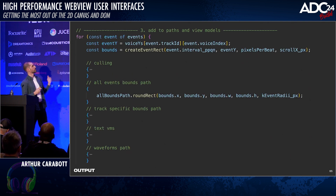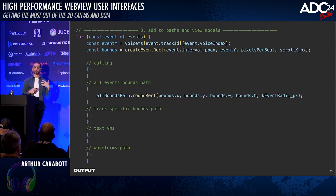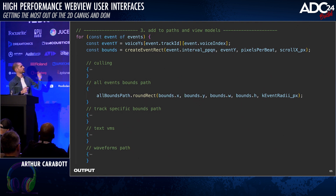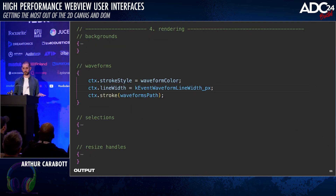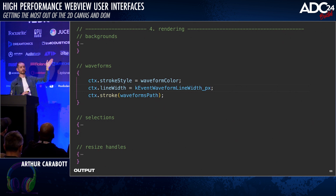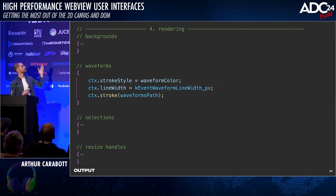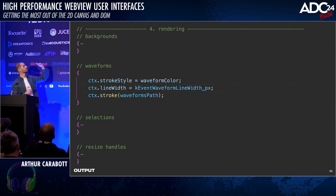The third section is looping over the events, where we do any calculations specific to those events — the exact bound positions — and add geometries to the paths. In this case, we add a rounded rectangle to a path called all bounds path. Finally, the fourth thing is to actually render them — put them on screen. Here I'm rendering the waveforms path, which is the waveform for every single event — the thousands of events you saw on screen — once. Because they all have the same stroke style and line width, we only end up calling those functions once and then draw the entire path.